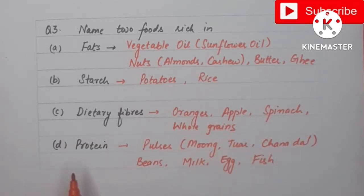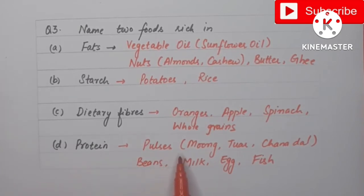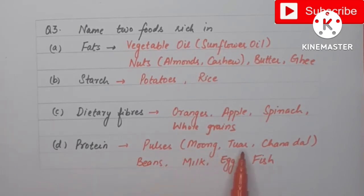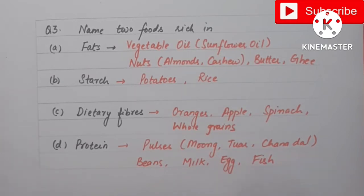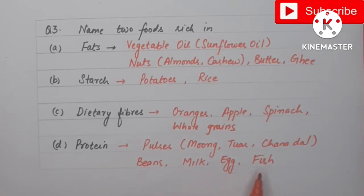The last one is protein. Protein is found in pulses like moong dal, toor dal, and chana dal. It is also present in beans like soya bean and rajma, and in milk, eggs, and fish.